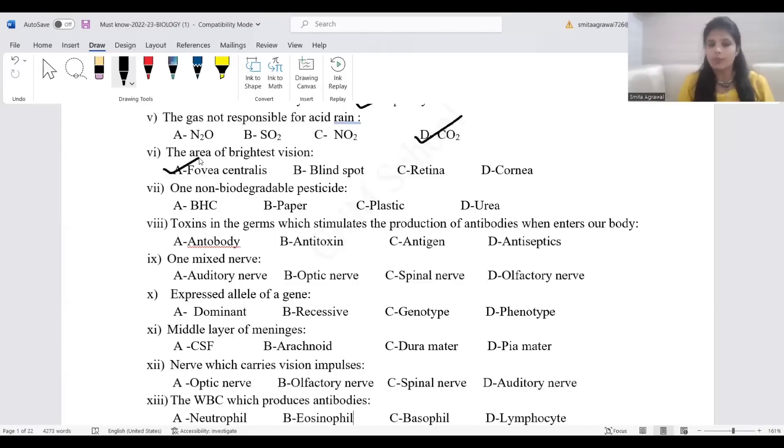Non-biodegradable pesticide. Question is non-biodegradable, so urea or paper eliminate. You have BHC and plastic. Question is pesticide, plastic is not pesticide. BHC, that is benzene hexachloride, is a pesticide.